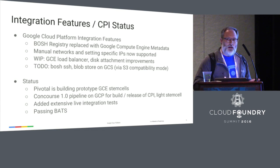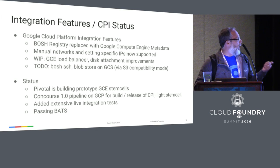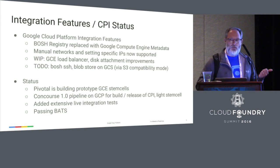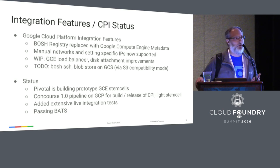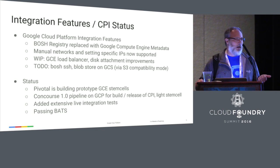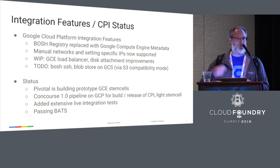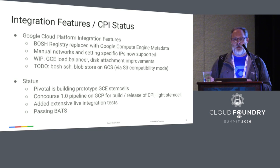Blobstore on GCS probably just works out of the box — we have an S3 compatibility mode on GCS, so that should be an easy one. Pivotal is building a prototype GCE stem cell right now, and that's going really well. We've got the Concourse pipeline set up; we build and release the CPI. We also do a light stem cell, pull the heavy stem cell across from S3 that Pivotal builds, and drop it into GCS — so when you spin things up on GCE, you've already got that inside Google's network.